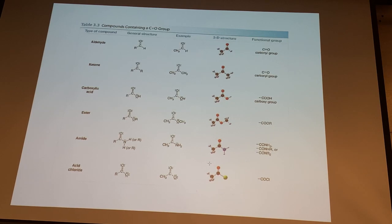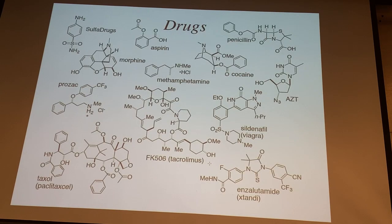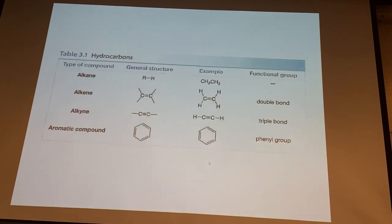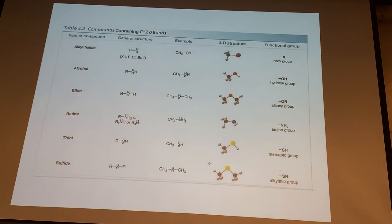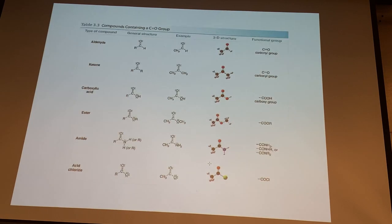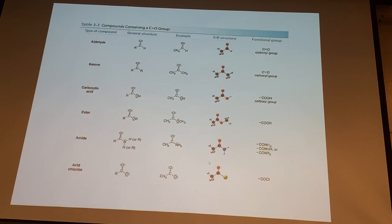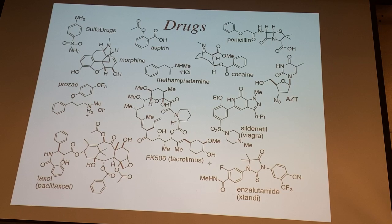So those are the carbonyl compounds. Let's count them: alkane, alkene, alkyne, arene — four hydrocarbons; halide, alcohol, ether, amine, thiol, sulfide — six heteroatom groups; aldehyde, ketone, carboxylic acid, ester, amide, acid chloride — six carbonyls. That's 16 total. These names have importance — we'll use those terms over and over again. This is the language of organic chemistry, and it carries over into biochemistry.